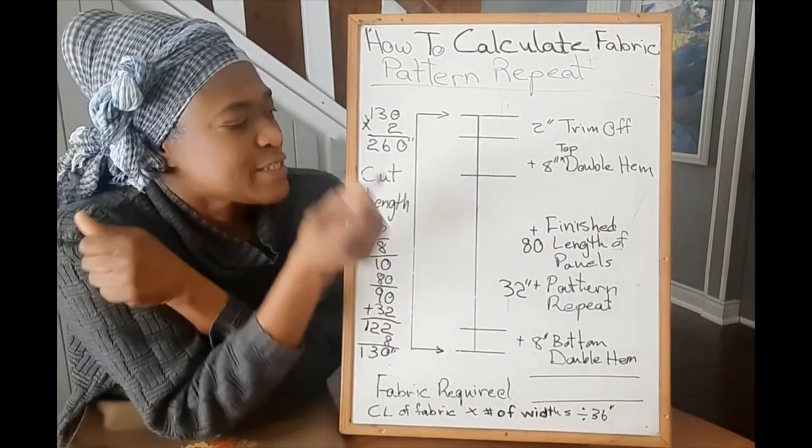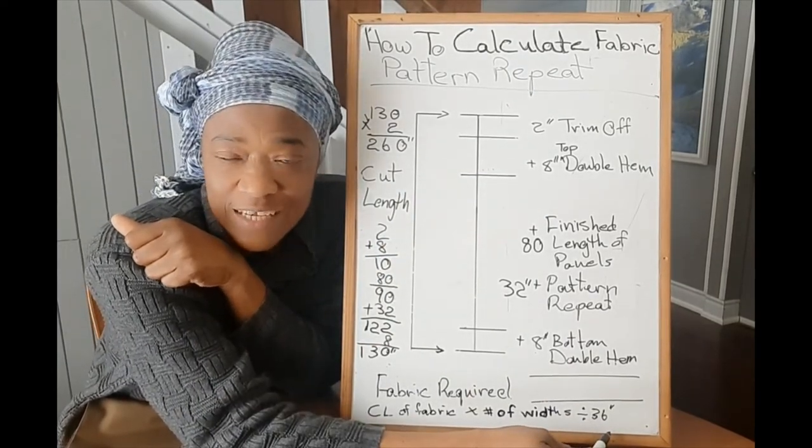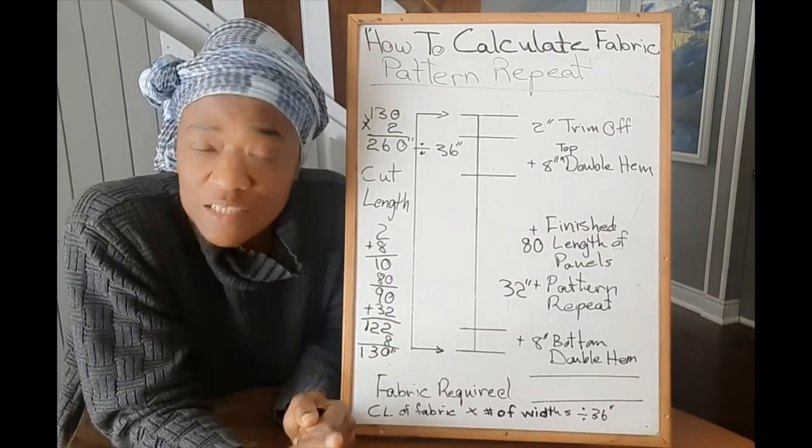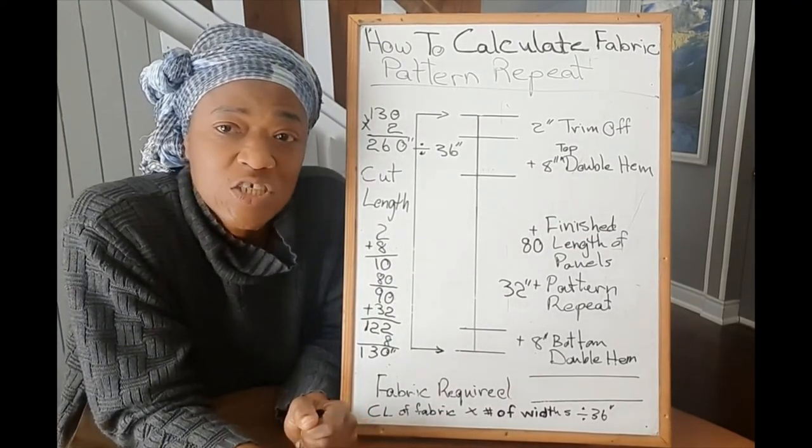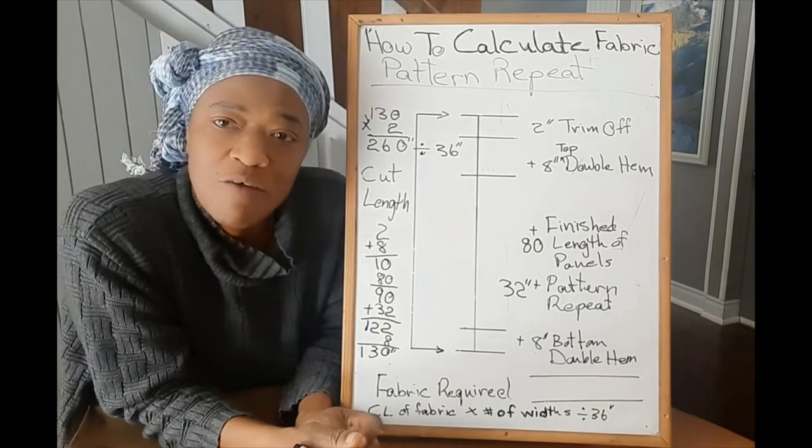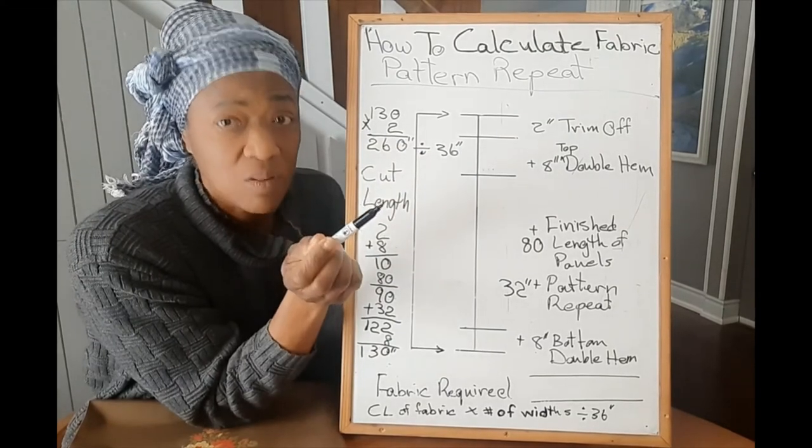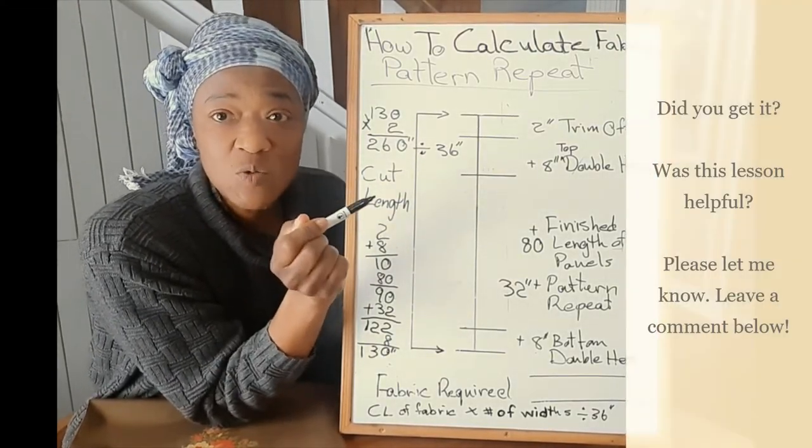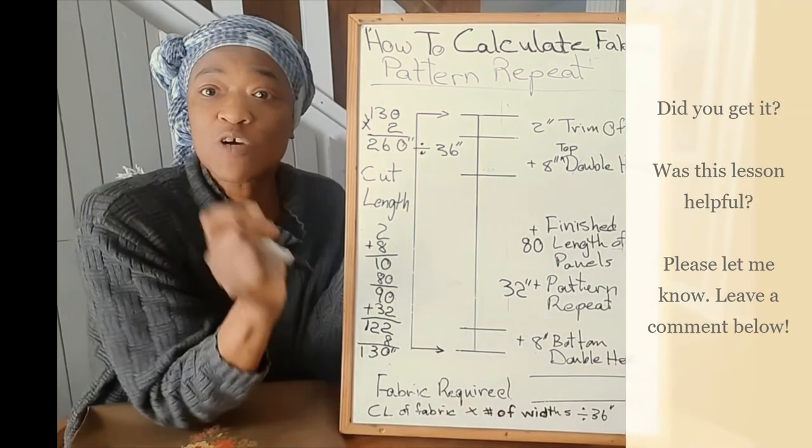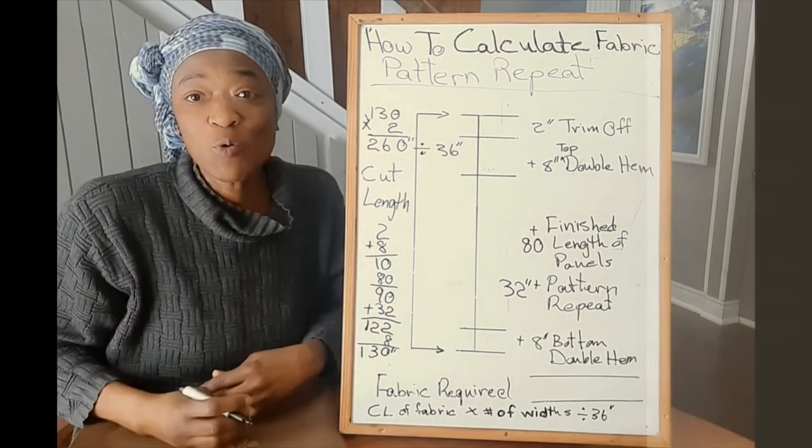So what we do then is take our 260 inches and then divide by 36 inches. We divide this by 36 inches, and we do that because there are 36 inches in a yard. So how many 36 we get from the 260 will be the number of yards that we need. Now I use two widths as an example. However, check out that video because it gives you step-by-step instructions on how to get the number of widths you will need for your particular window.